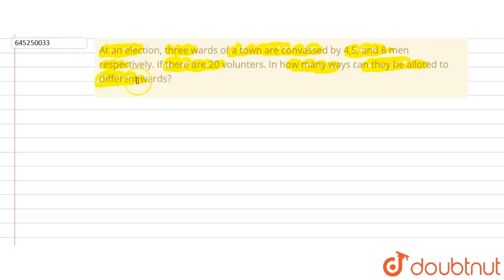So we have total number of volunteers equal to 20. What we'll do is, as we have to give four volunteers to ward one, we'll start from there.